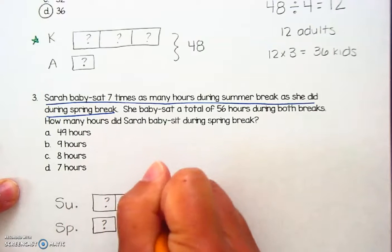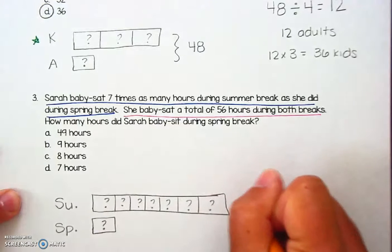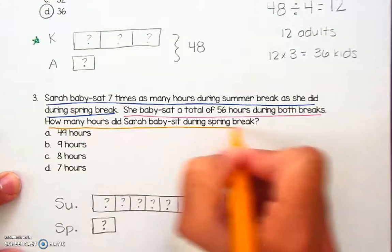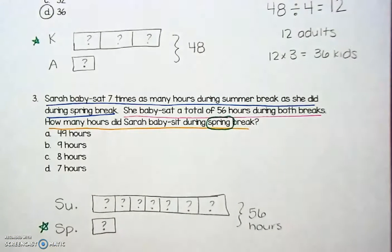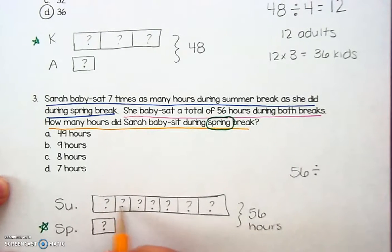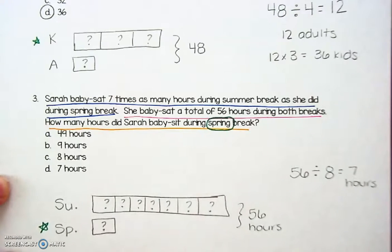Sentence two reads: she babysat a total of 56 hours during both breaks. So that means between summer break and spring break, she babysat for 56 hours. How many hours did Sarah babysit during spring break? I need to pay attention that I'm looking for spring break this time, which is just one box. So to figure out the mystery number in each box, I can take 56 and divide it by 8 groups total. 56 divided by 8 is a basic fact — that's seven hours for each mystery number. And since I'm only looking for spring break, I don't have to do any more work. I have my answer of seven hours during spring break.